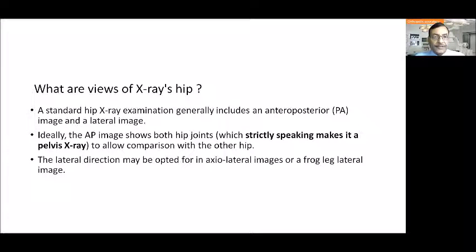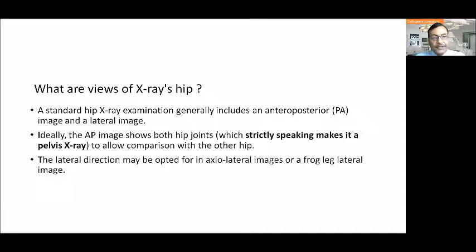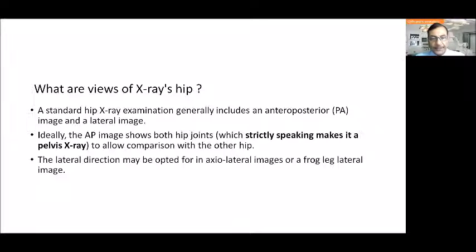What are the views that can be taken when there is a suspicion of fracture neck of the femur? A standard hip X-ray examination includes an anteroposterior view and a lateral view. Ideally the AP image should include both hips, so strictly speaking it is a pelvic X-ray. Lateral views include the axial lateral, the frog leg lateral, and the Lowenstein image, which we will be discussing shortly.